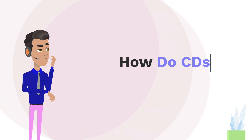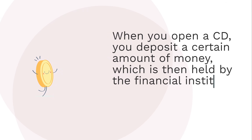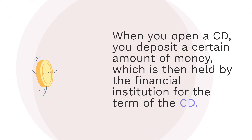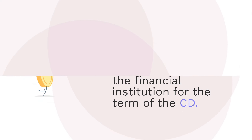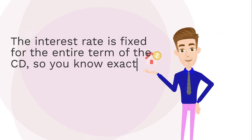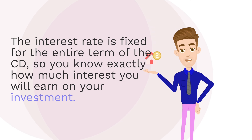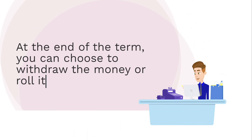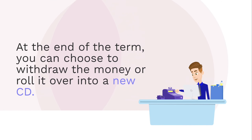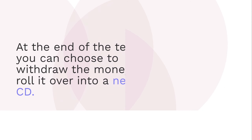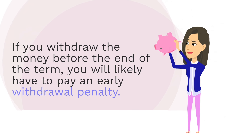How do CDs work? When you open a CD, you deposit a certain amount of money, which is then held by the financial institution for the term of the CD. The interest rate is fixed for the entire term, so you know exactly how much interest you will earn on your investment. At the end of the term, you can choose to withdraw the money or roll it over into a new CD. If you withdraw the money before the end of the term, you will likely have to pay an early withdrawal penalty.